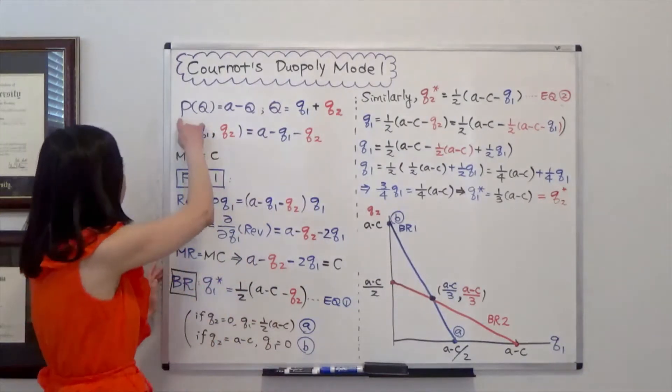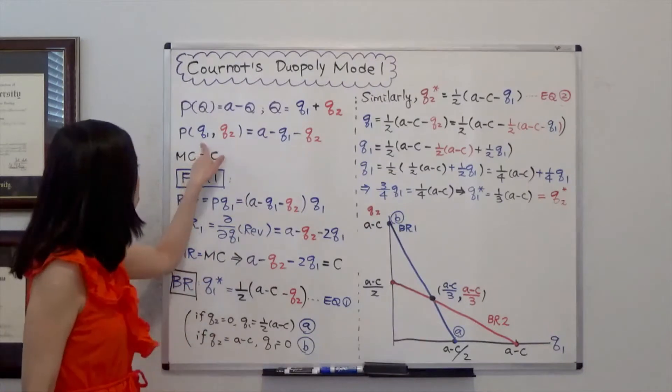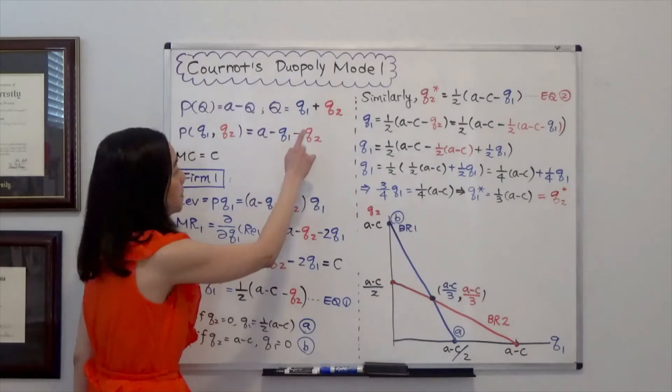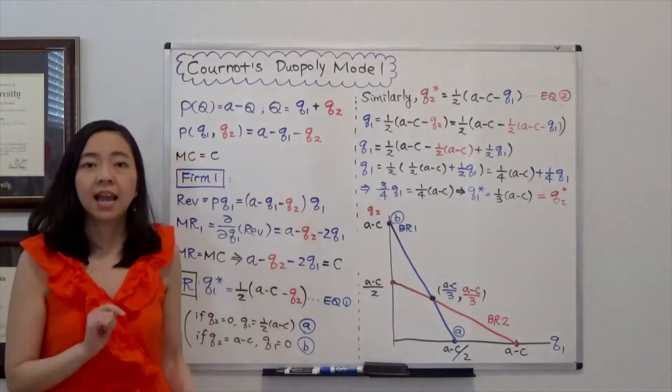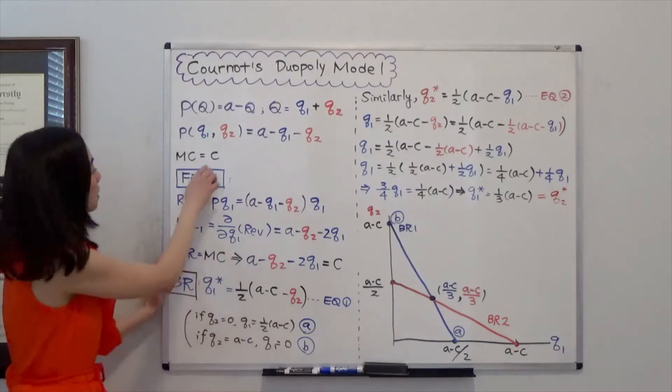So we can rewrite inverse demand function P as a function of Q1 and Q2 and that is equal to A minus Q1 minus Q2. And also for each firm there is a constant marginal cost which is equal to C.